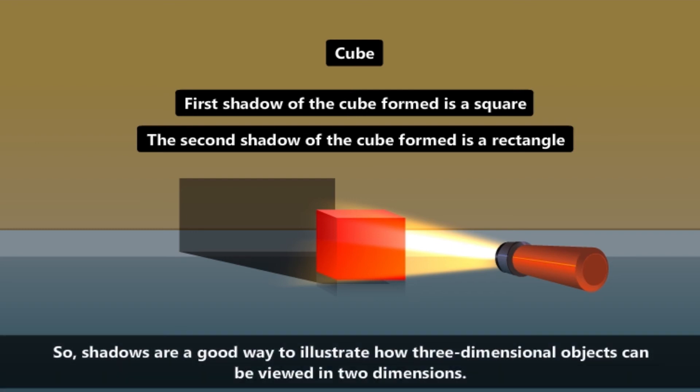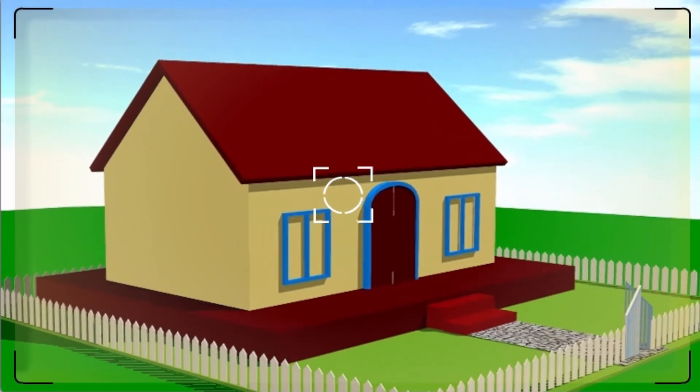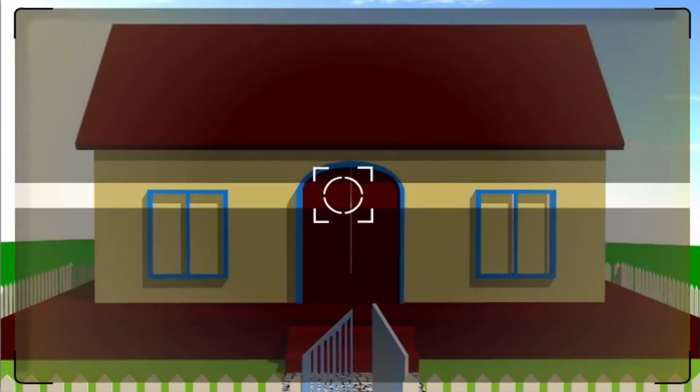So shadows are a good way to illustrate how three-dimensional objects can be viewed in two dimensions. Observe this house carefully. Let us take pictures of the house from the front, top, and the side.